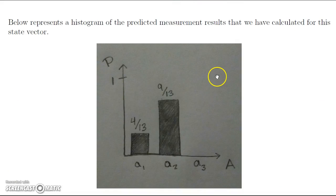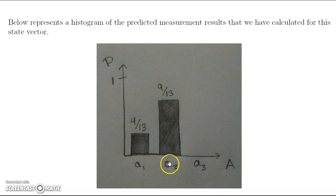We represent this histogram of the predicted measurement results, with probability on the y-axis and the eigenvalues on the x-axis. We have 4 over 13 for the measurement A1, 9 over 13 for A2, and a probability of 0 for A3. That's going to be it. Thank you.